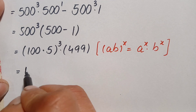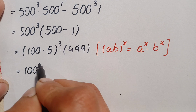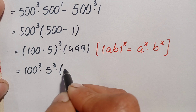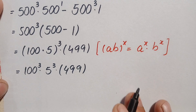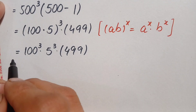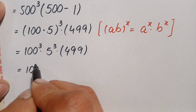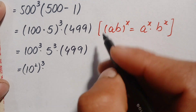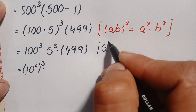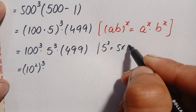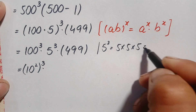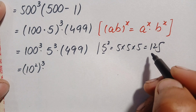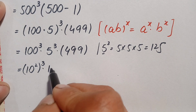Using this identity, the expression becomes 100 to the power 3 times 5 raised to power 3, times 499. We can write 100 as 10 squared, raised to power 3. And 5 cubed is simply 5 times 5 equals 25, and 25 times 5 equals 125, so 5 cubed equals 125. We replace this with 125.